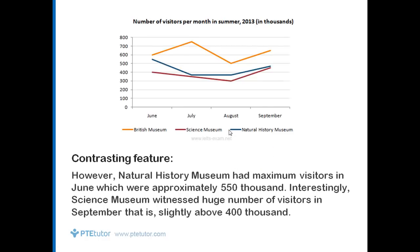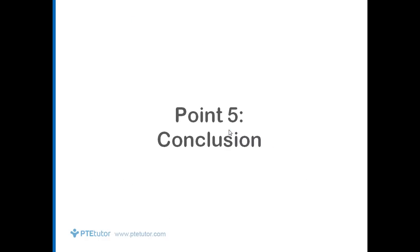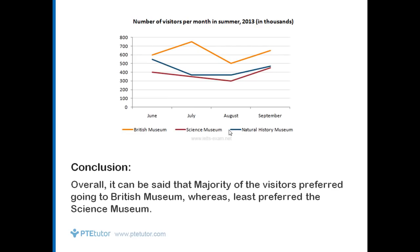Now let's move forward to the conclusion. To conclude your image, words you can use initially include: 'overall,' 'to sum up,' 'at the end,' and many more. For example: 'Overall, it can be said that the majority of the visitors preferred going to British Museum, whereas the least preferred the Science Museum.' This is what I meant regarding the five-point formula — it is not possible to cover all values in 40 seconds, which is why this simple template works for all image types.